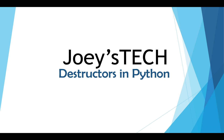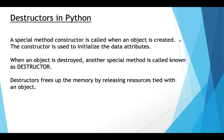Hey my friend, this is Joey back with another exciting video to educate you about destructors in Python. When an object is created, a special method known as the constructor is called, which can be used to initialize the data attributes. Now when an object is destroyed, another special method is called, which is known as the destructor. You can imagine the destructor to be a twin of the constructor, but it is a savior as it frees up the memory by releasing resources that are tied to an object.